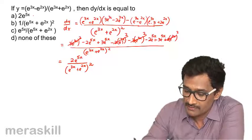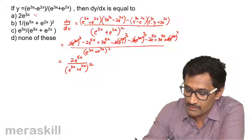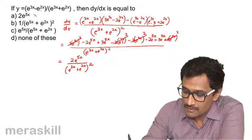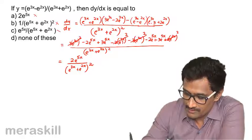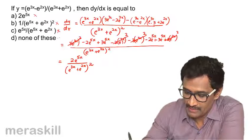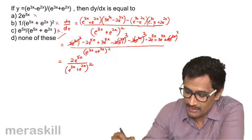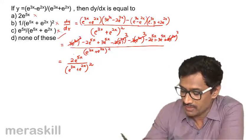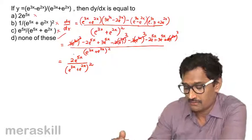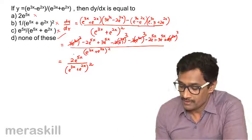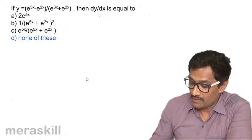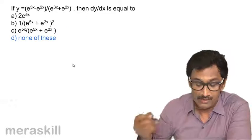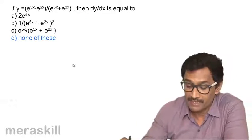Checking the options — it's definitely not option A, not option B, nor option C since any valid answer must have a square in the denominator. Ultimately the answer is none of these.